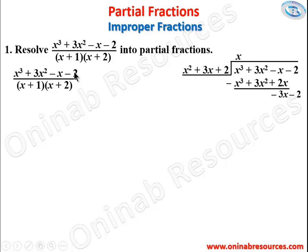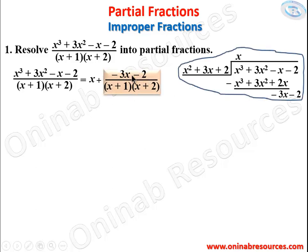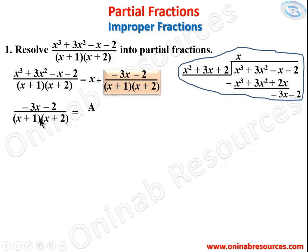From the division, the fraction equals x (the whole part) plus the remainder over the original denominator. We now resolve −3x − 2 over (x+1)(x+2) into partial fractions. Since the denominators are linear non-repeated factors, we write it as A/(x+1) + B/(x+2).